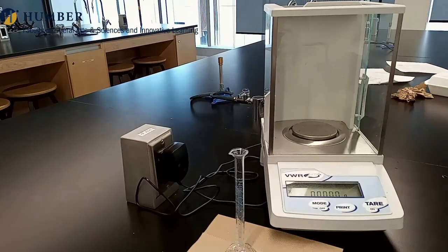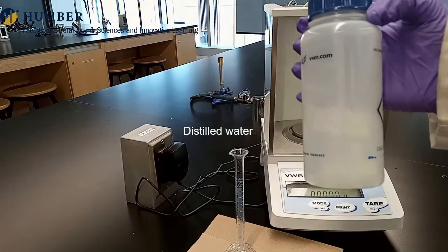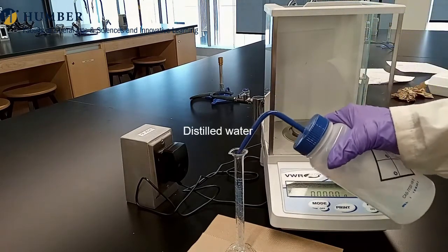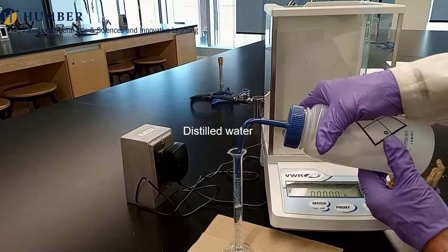The difference in mass, m2 minus m1, will give the mass of sample A. Repeat this procedure for water and sample B.